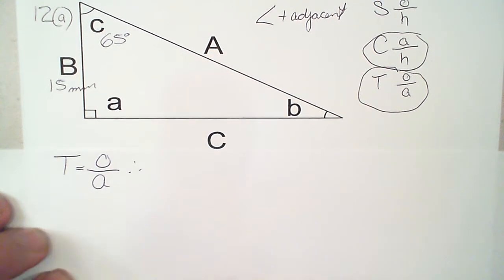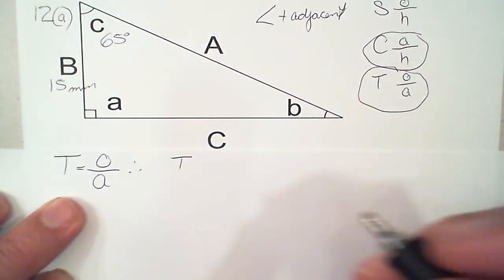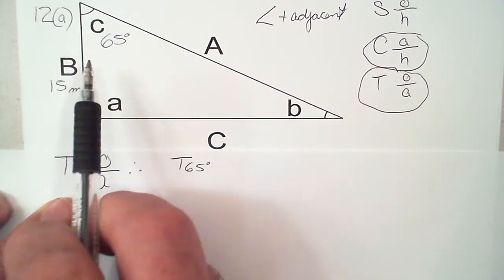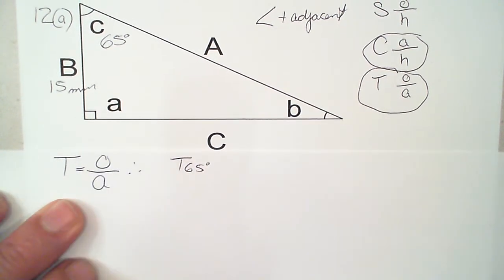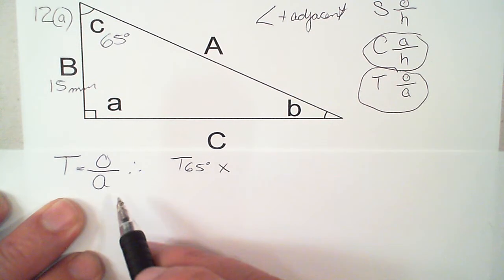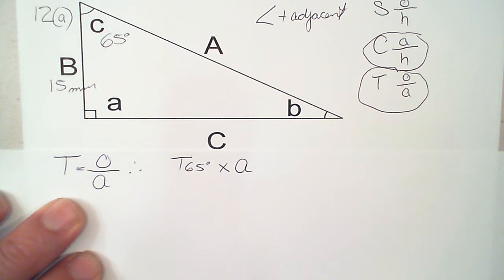we transpose and we'll have tangent, which is 65 degrees, it's Angle C, multiplied by the adjacent, which happens to be Line B.